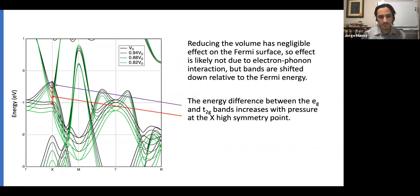We looked at the band structure. The Fermi surface remains the same, essentially no changes at the Fermi surface when the volume changes. This is likely not due to electron-phonon interaction. There are these changes at the X high symmetry point. This band is mostly EG in character, and this one is T2G. As the pressure increases, the separation between them increases, and this tells you about the asphericity of the crystal.